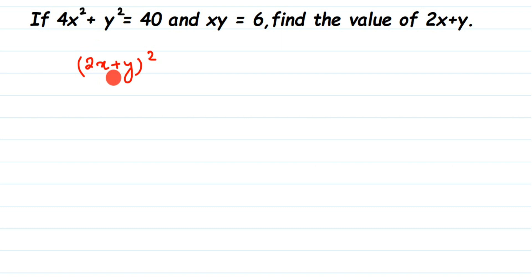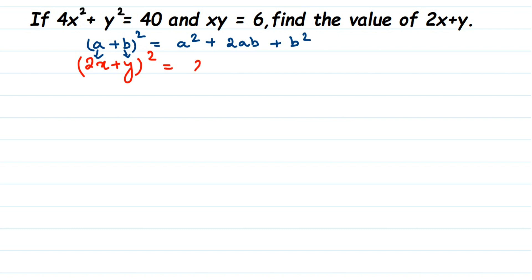The identity is (a + b)² — in place of a we put 2x, and in place of b we put y. The identity (a + b)² = a² + 2ab + b². So wherever you see a, put 2x; wherever you see b, put y. This gives us (2x)² + 2·(2x)·(y) + y².